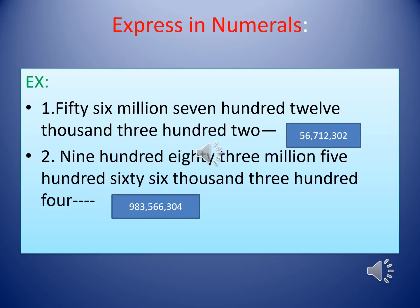Now we are going to discuss about the standard form. As part of that, we can express the given number name as a numeral. The given example is 56,712,302. We can read the number name slowly according to their periods: fifty-six million, seven hundred twelve thousand, three hundred two.